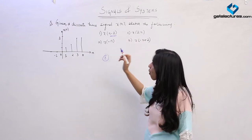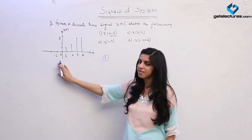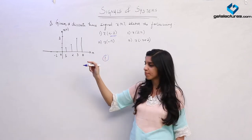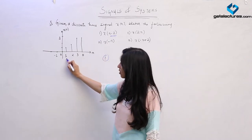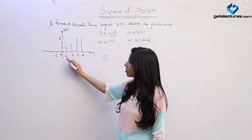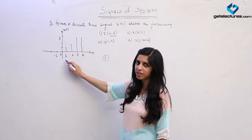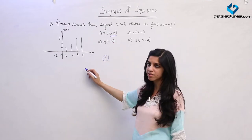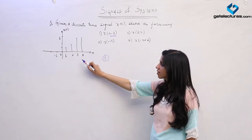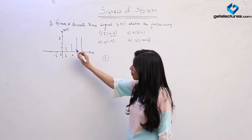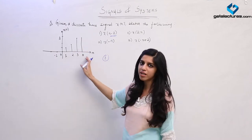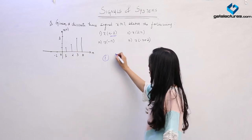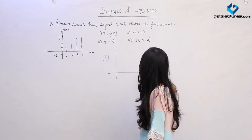All the samples of the signal get shifted by 2 units in time. The sample which was earlier occurring at n=1 is now going to occur at n=3. Similarly, the sample at n=4 is going to occur at n=6. So this signal, which was previously between n=1 and n=4, is now going to lie between n=3 and n=6. This is how the signal is going to look now.